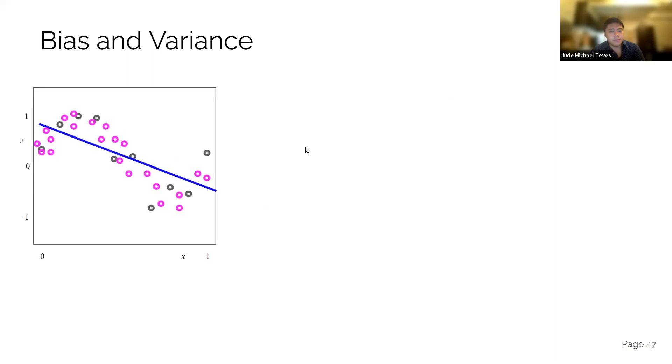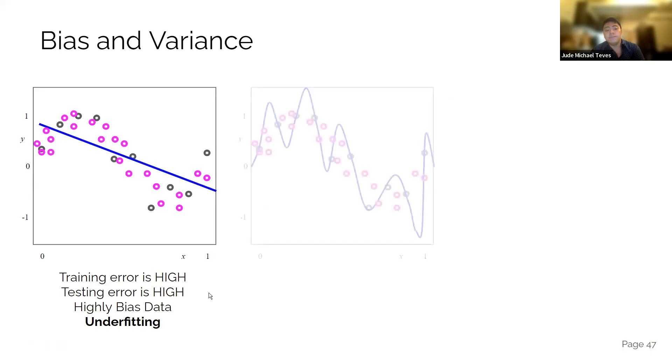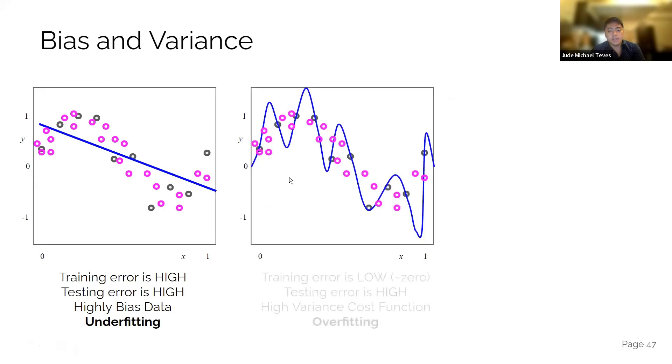I'll show more examples in a minute. If the train error is high, testing error is high means it's a highly biased data and that's underfitting. If you have training error low and testing error high, that means it's a high variance cost function. That's overfitting.